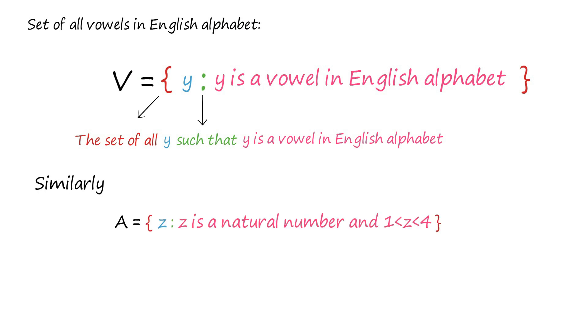Similarly, the description of a set A represented in set builder form as shown is read as: the set of all z such that z is a natural number and z lies between 1 and 4. Therefore, the elements of set are 2 and 3.